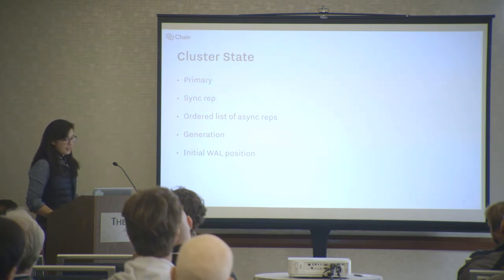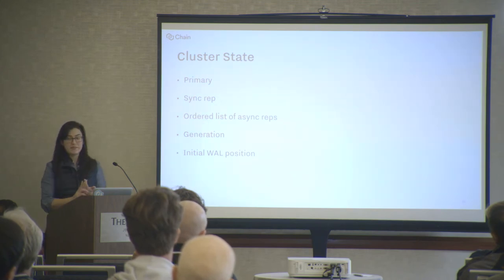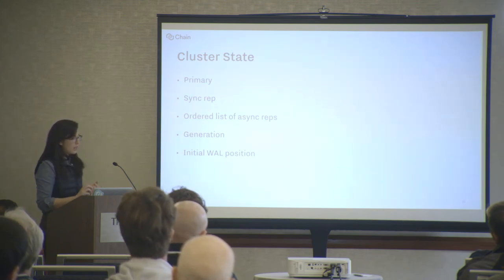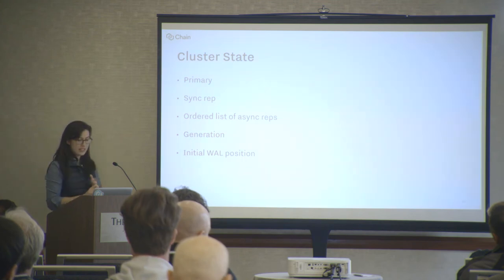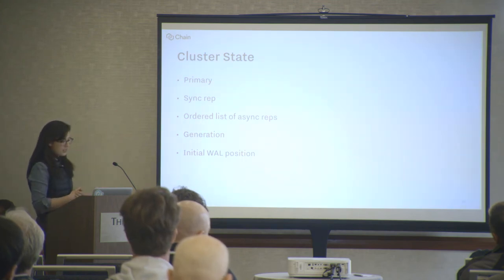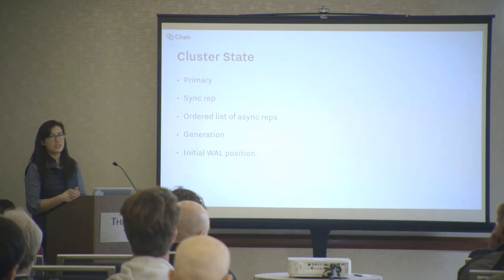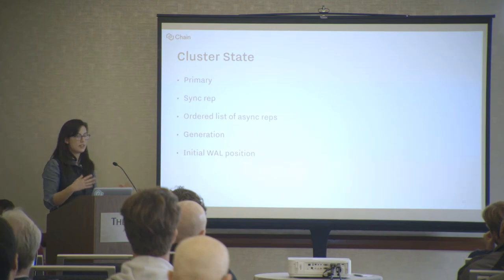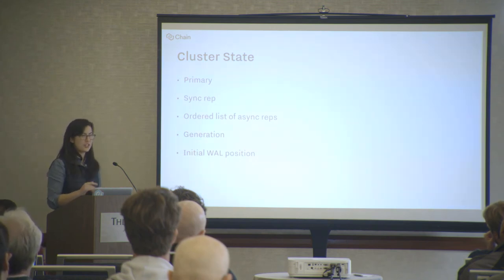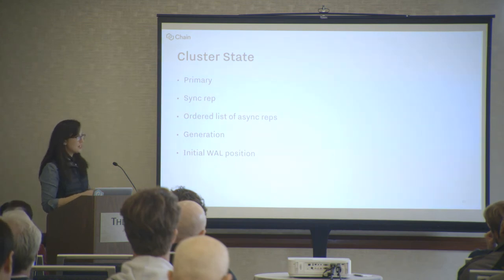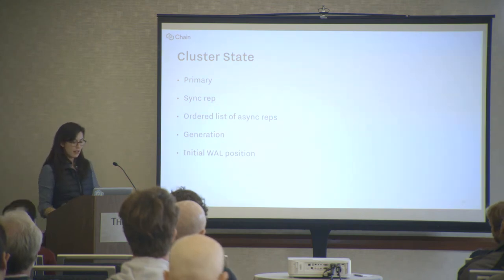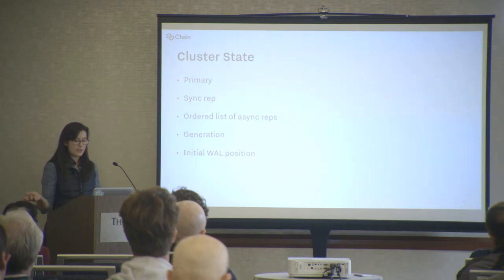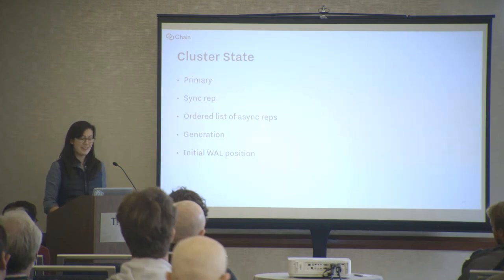So this is what the cluster state includes. It includes unique identifiers for the primary, the sync rep, and all of the async reps. It also includes a number for the generation, which uniquely identifies this particular cluster state. If a peer changes anything in the cluster state, it must increment the generation to prevent collisions — the one exception is if the list of async reps changes, the cluster state can change without changing the generation. It also includes the position of the write-ahead log recorded at the time that this generation was declared. Keeping track of the WAL can be used to prevent data loss during certain edge-case events.